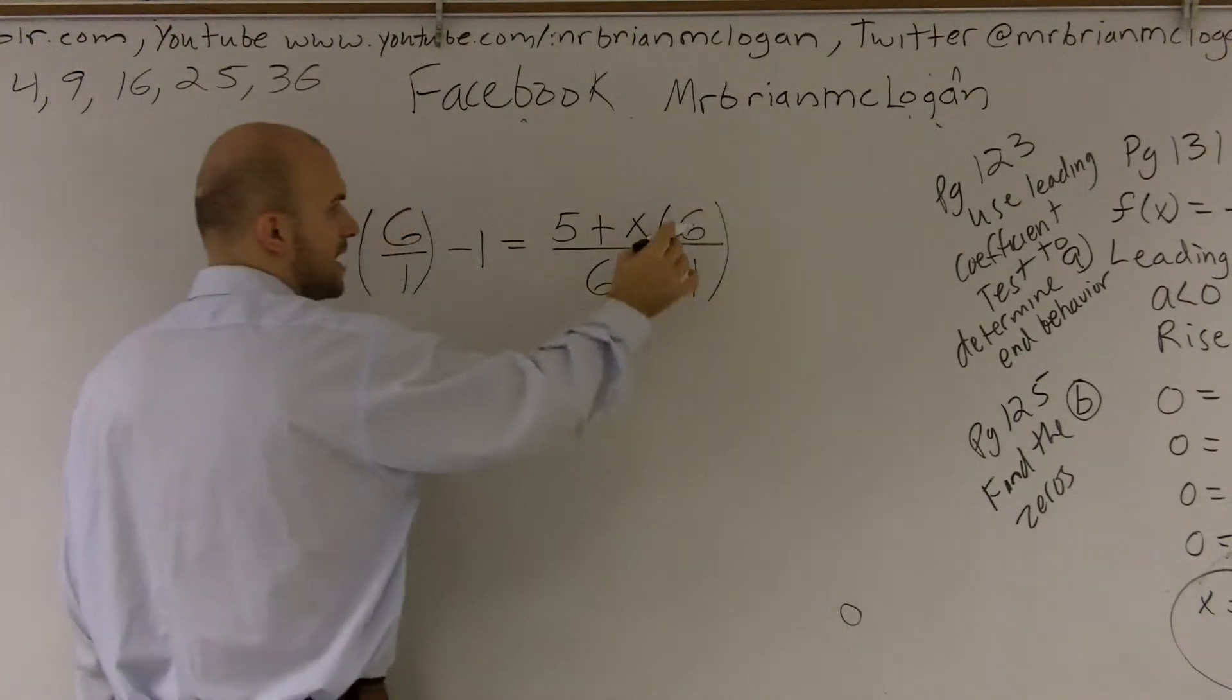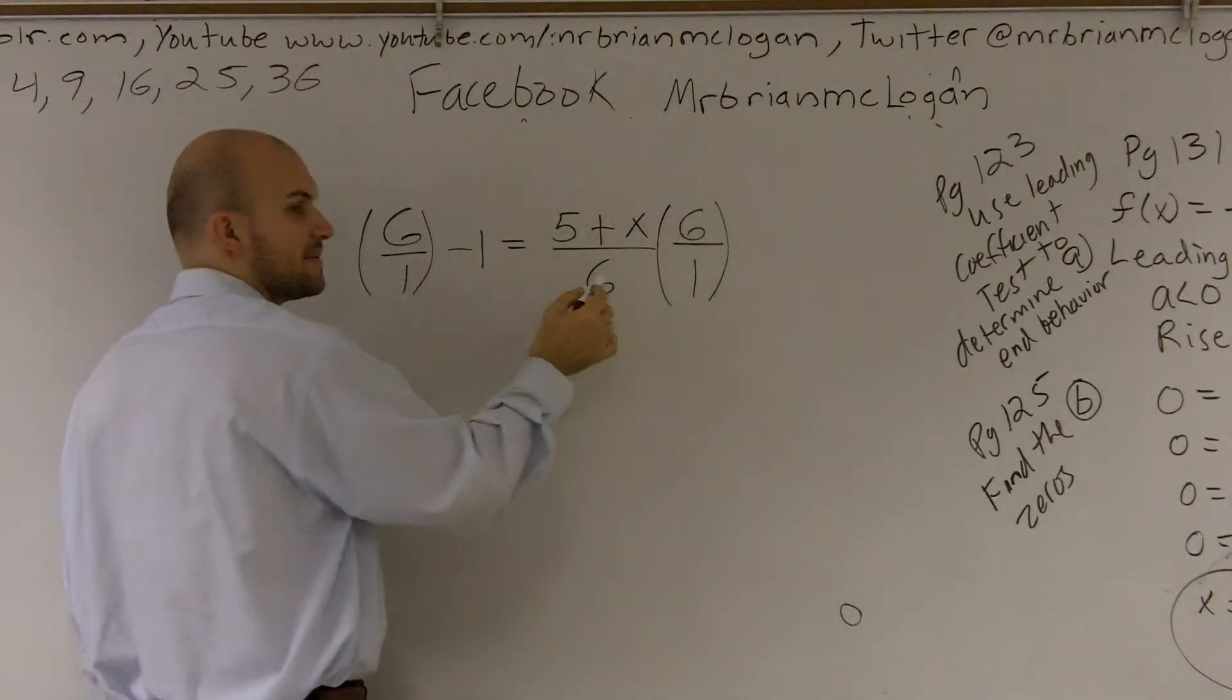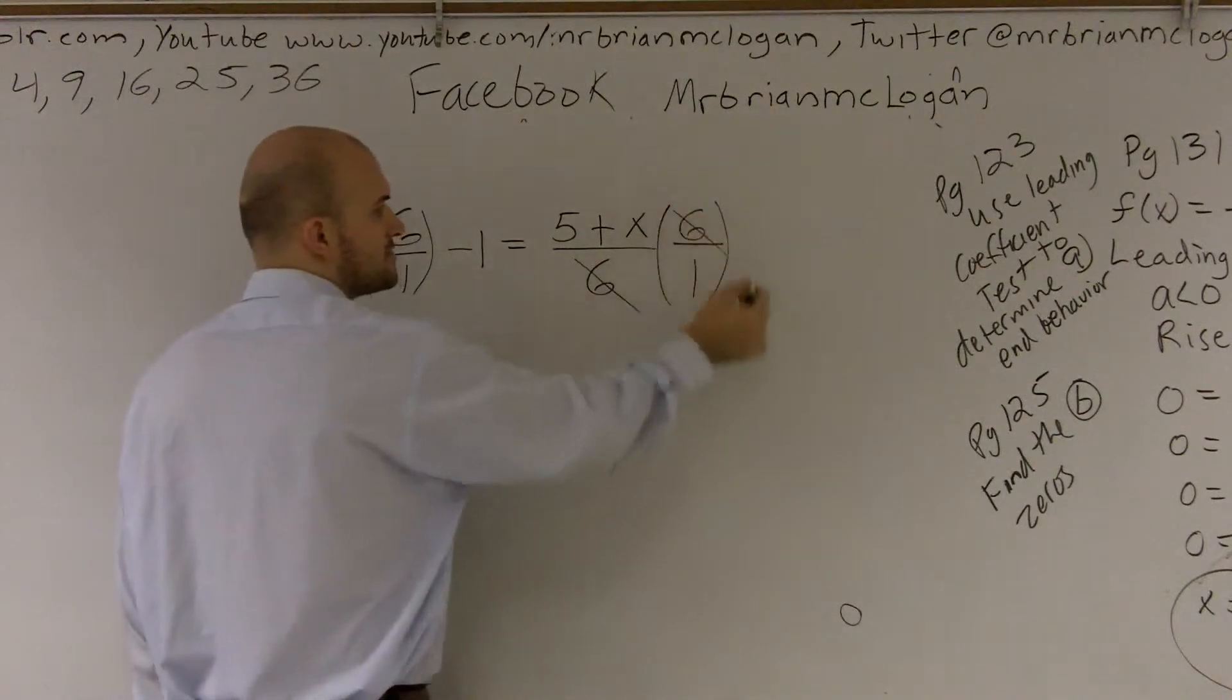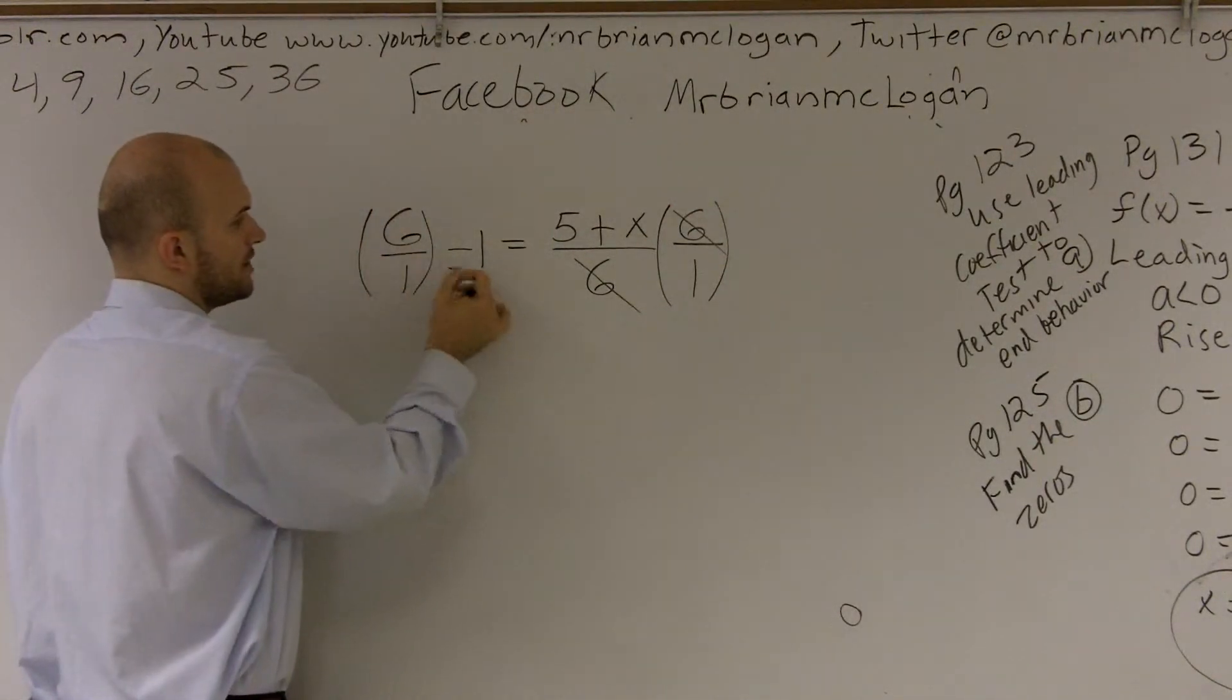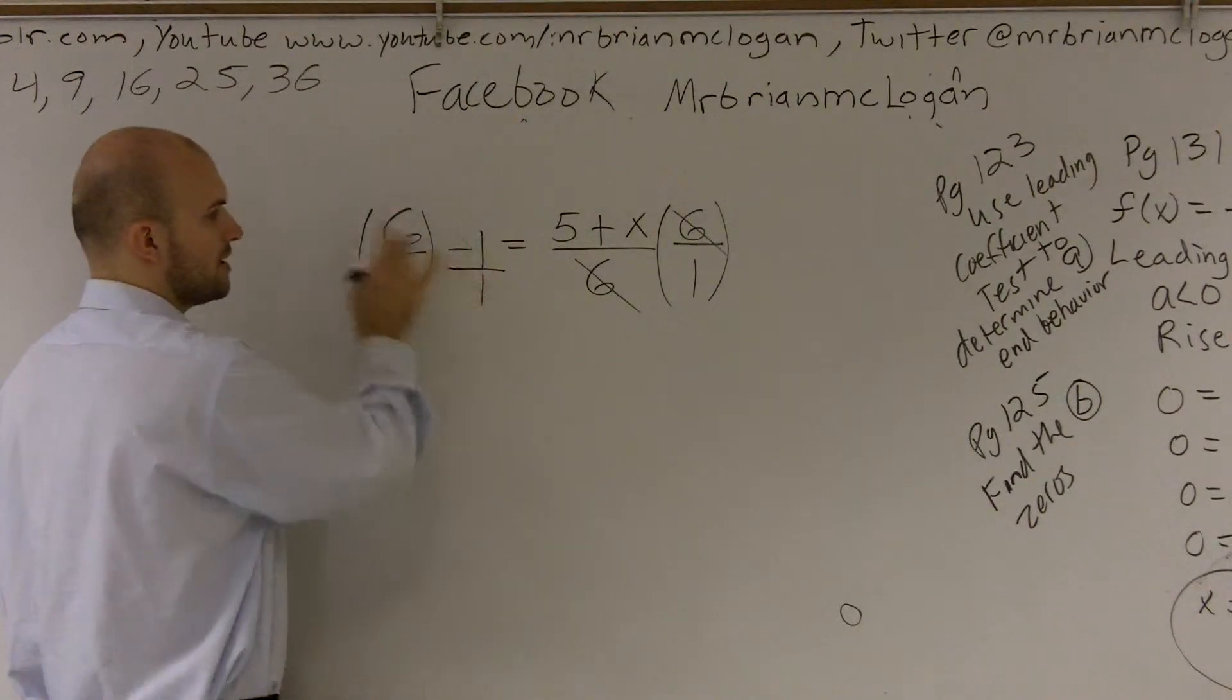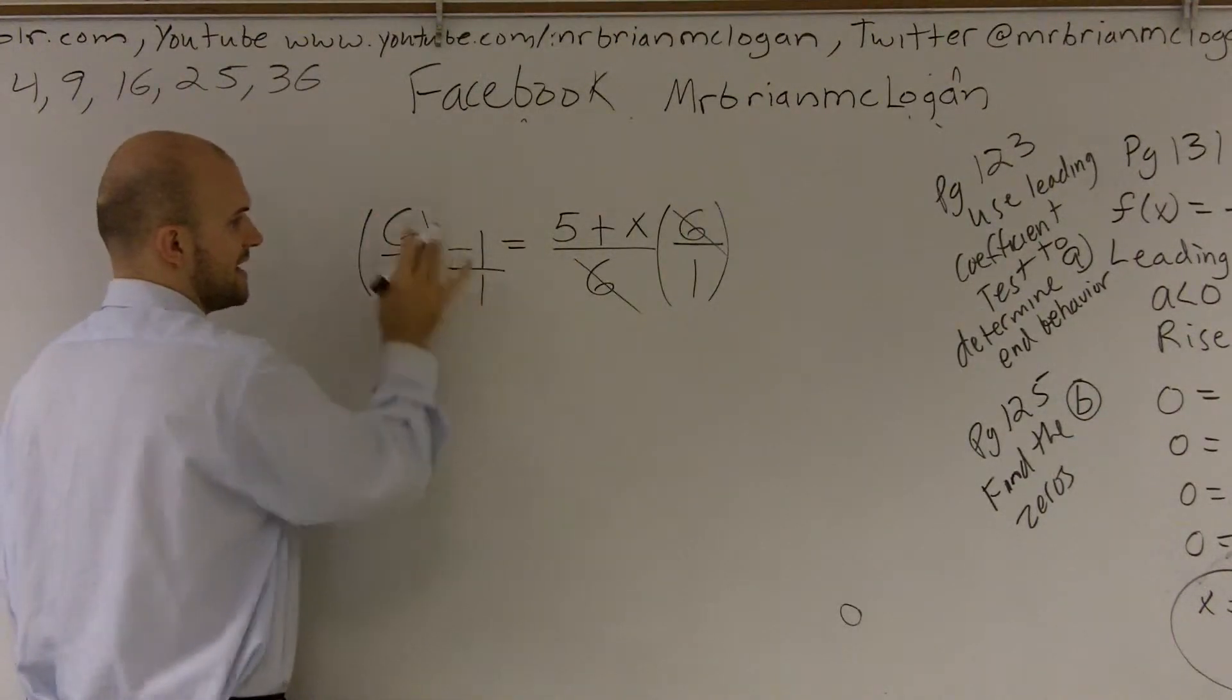Now, what that tells us to do is I can say that 6 divided by 6 is going to give us 1, or a lot of times we just like to say that it kind of cancels out. And 6 over 1 times negative 1, I can put this over 1 so I know that to multiply a fraction, I get negative 6.